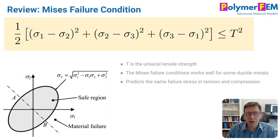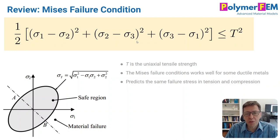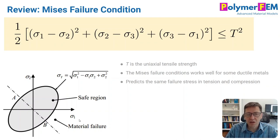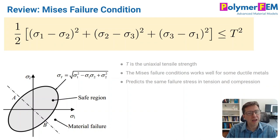Let's first review the Mises failure condition. That's a very simple condition that virtually everyone has heard of. You can write it in terms of the principal stresses sigma 1, sigma 2, and sigma 3, and when this condition reaches a critical value T² you say that failure occurs according to the Mises condition — a safe region versus a failure region. This does not work very well for some thermoplastics, but this is not what Christensen proposes — he says this is a basic condition that needs to be extended.